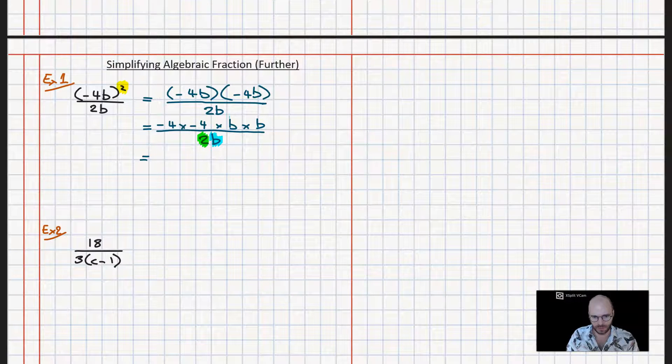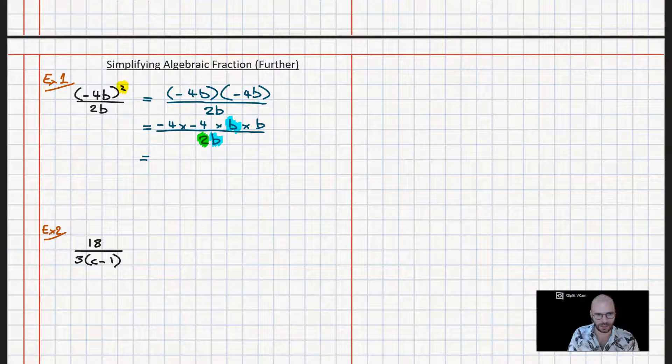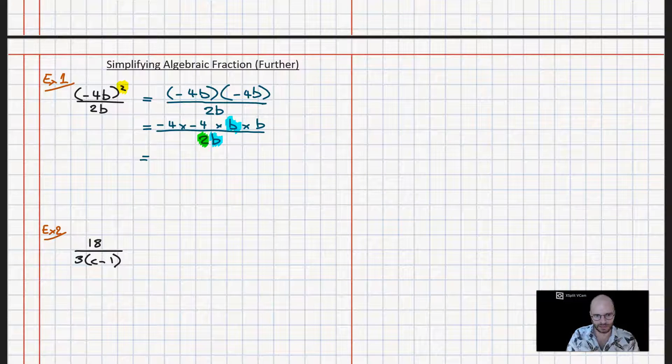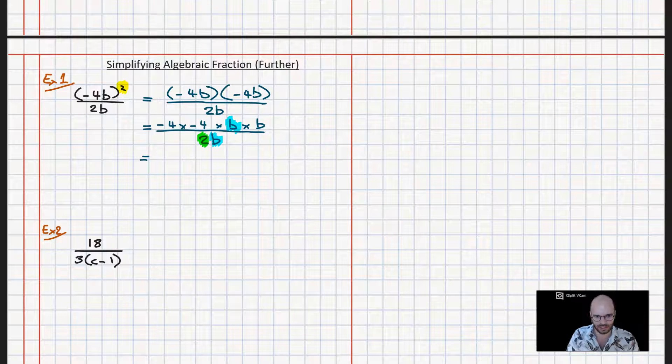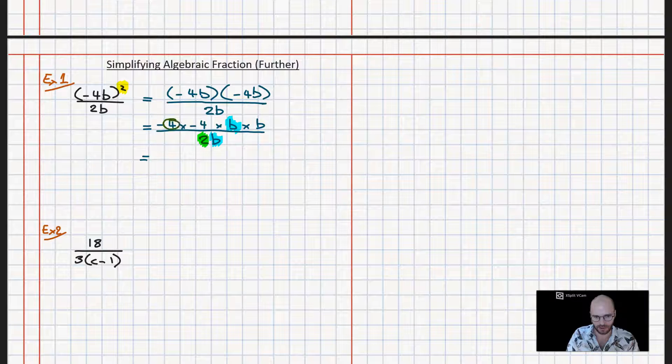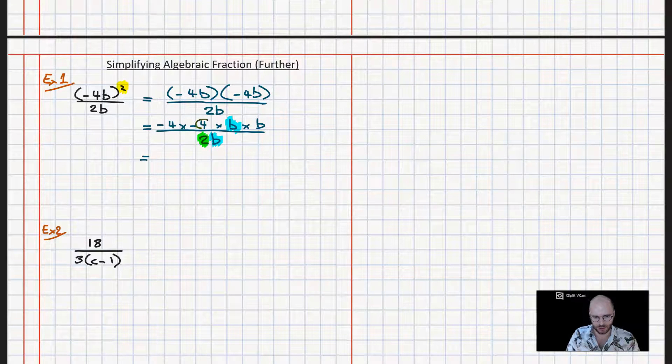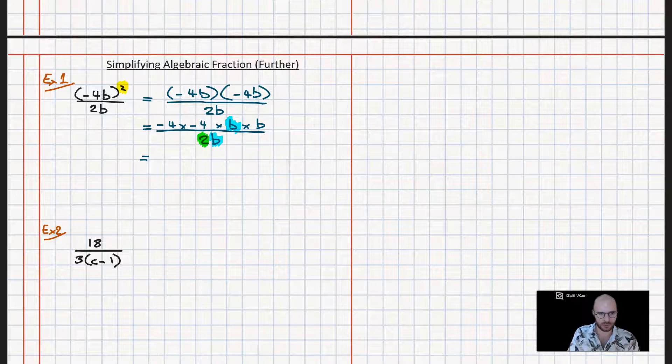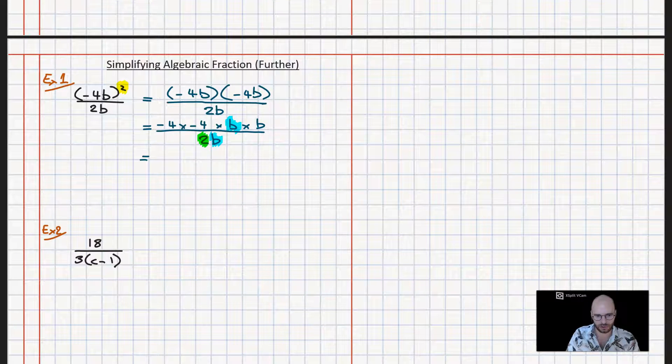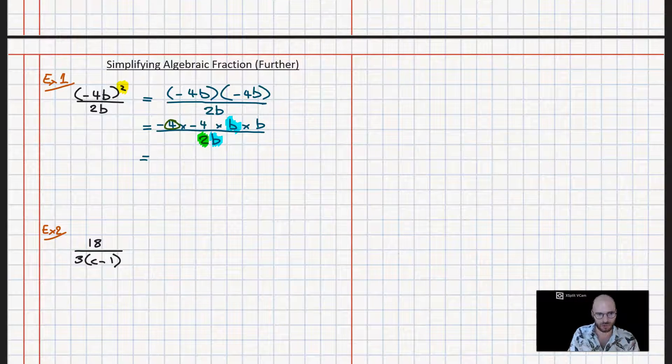We know that there's eventually going to be a 2 either here or we can get it from over here. So what I'm going to do is take a shortcut and I'm only going to factorize this first 4 over here.